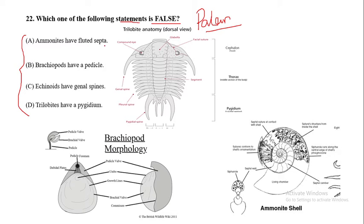The four options are: ammonites have floated septa, brachiopods have a pedicle, echinoids have genal spines, and trilobites have a pygidium. We need to identify which statement is wrong. I have provided images showing trilobite anatomy, brachiopod morphology, and ammonite shell with its various parts.